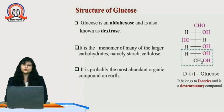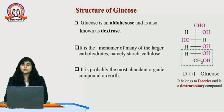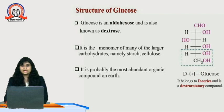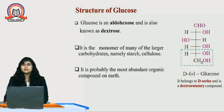Now we will see the structure of glucose. Glucose is an aldohexose and is also known as dextrose. It is called aldohexose because one aldehyde group is present on the 6-carbon chain. It is the monomer of many larger carbohydrates, namely starch and cellulose. Monosaccharides are the smallest units or monomers, so glucose is the smallest unit of polysaccharides like starch and cellulose. It is probably the most abundant organic compound on earth.